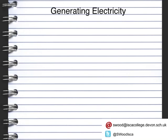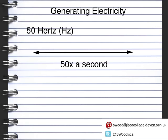Generating electricity uses a method called induction, which we're going to look at in a moment. In the UK, electricity is generated at a frequency of 50 hertz, meaning the electricity goes backwards and forwards at a rate of 50 times a second — that's what we understand as our AC frequency.